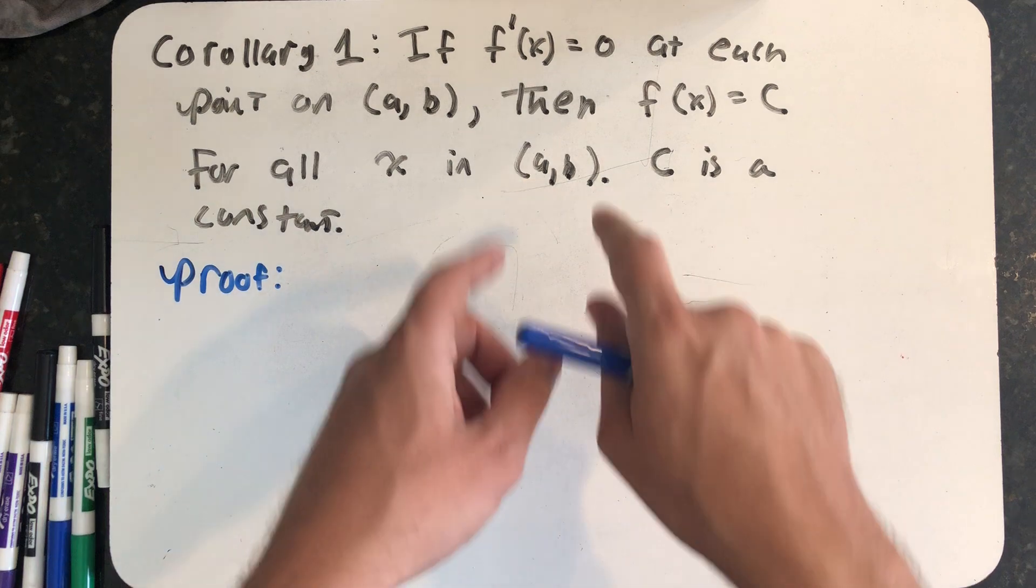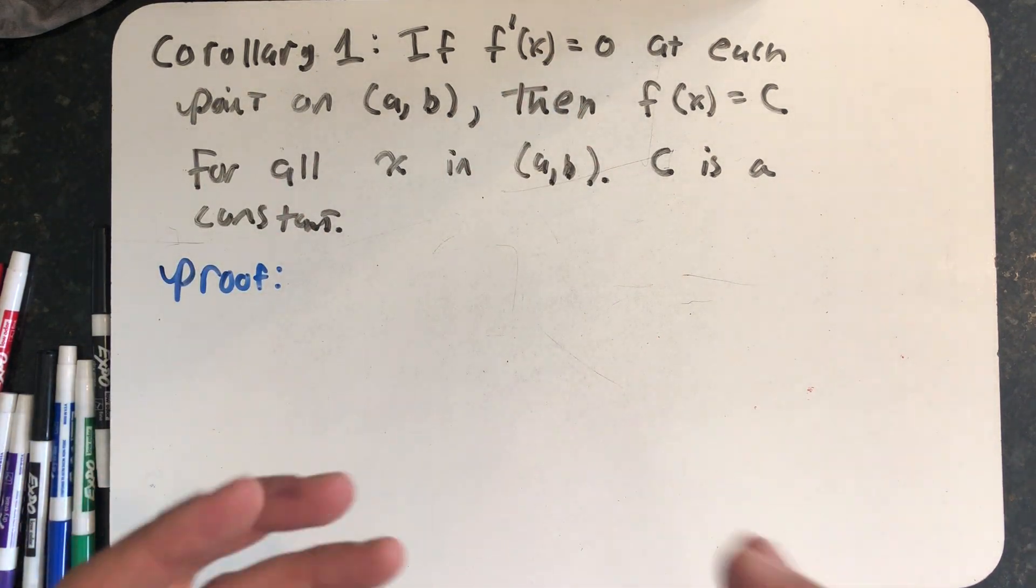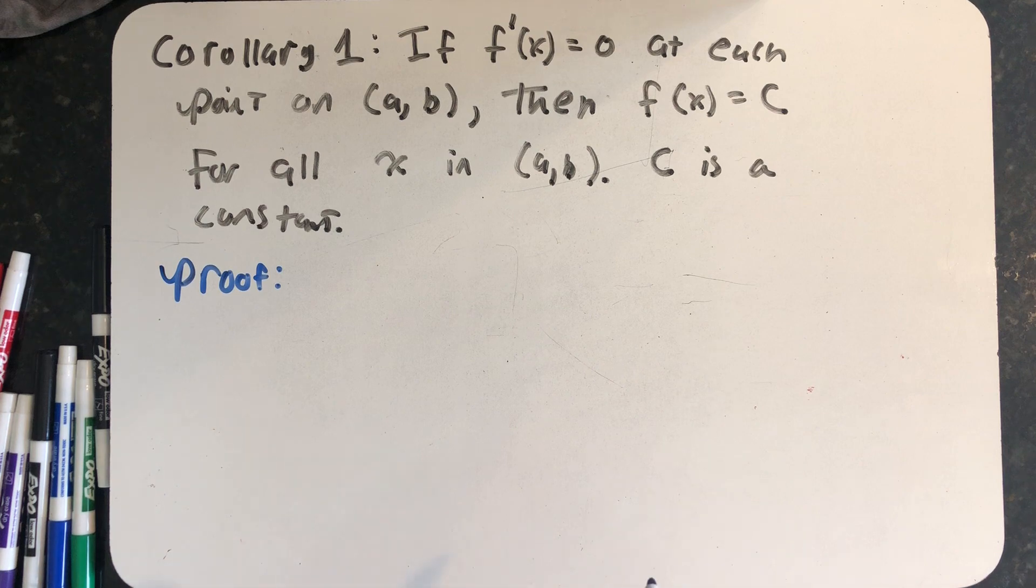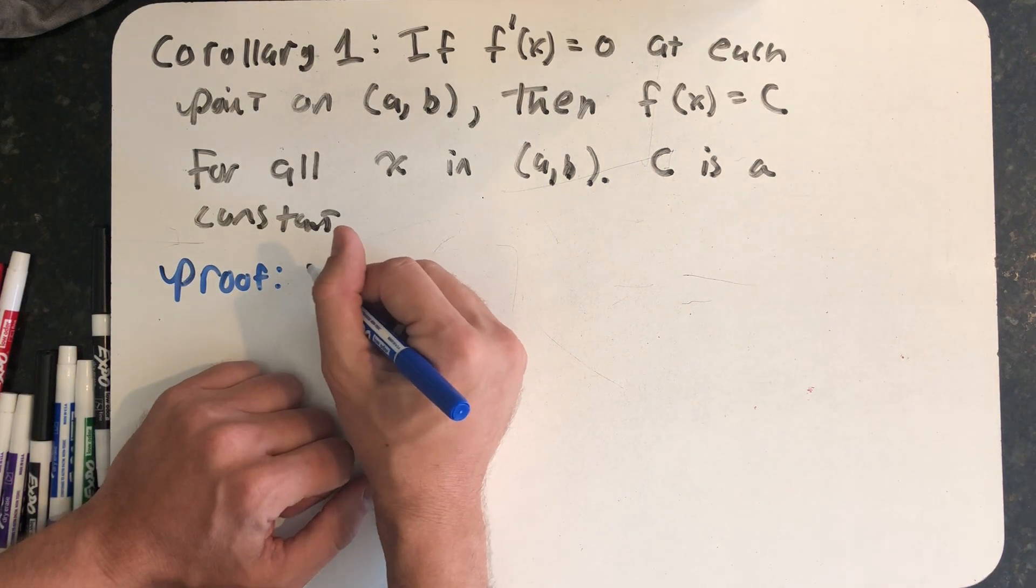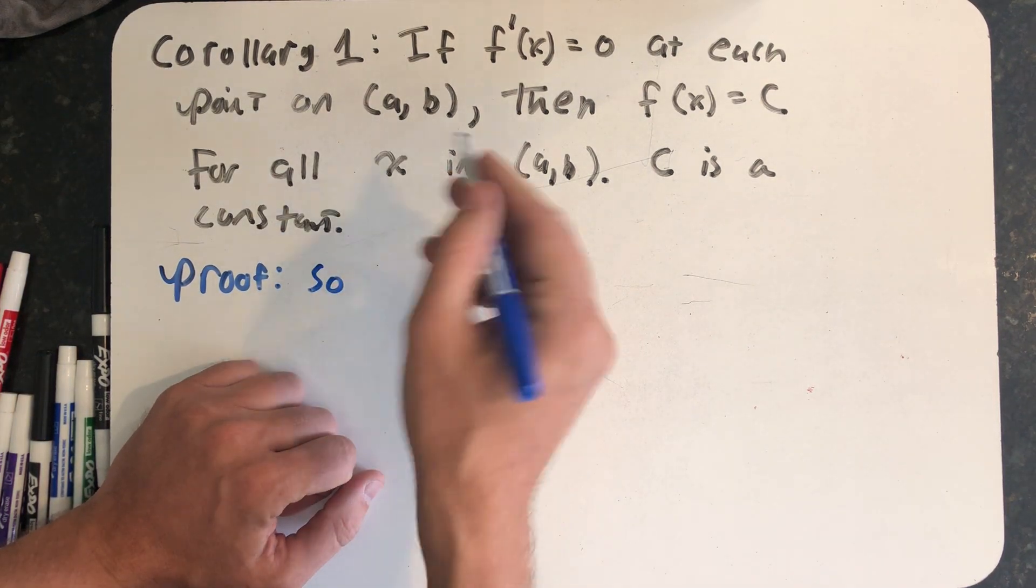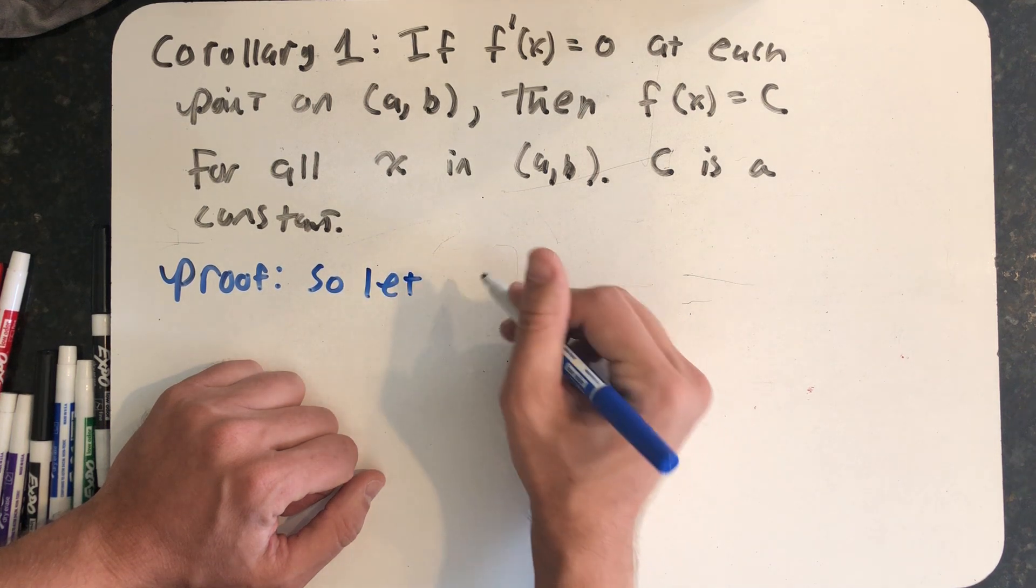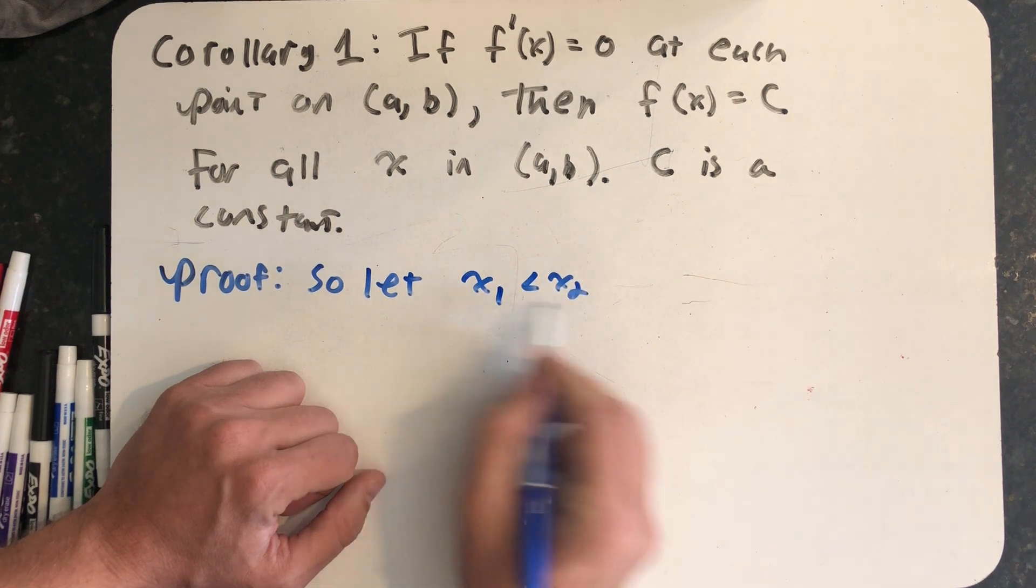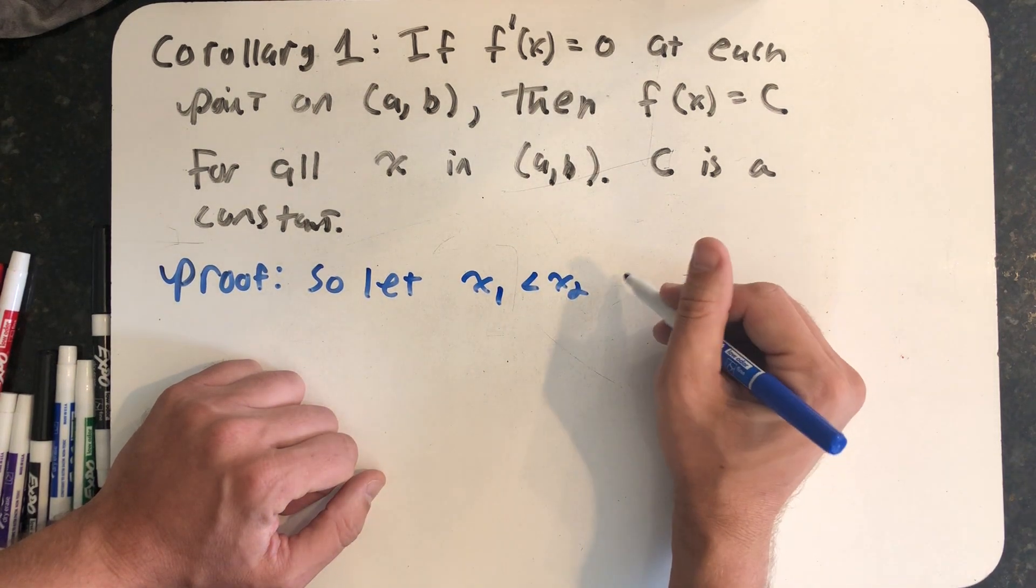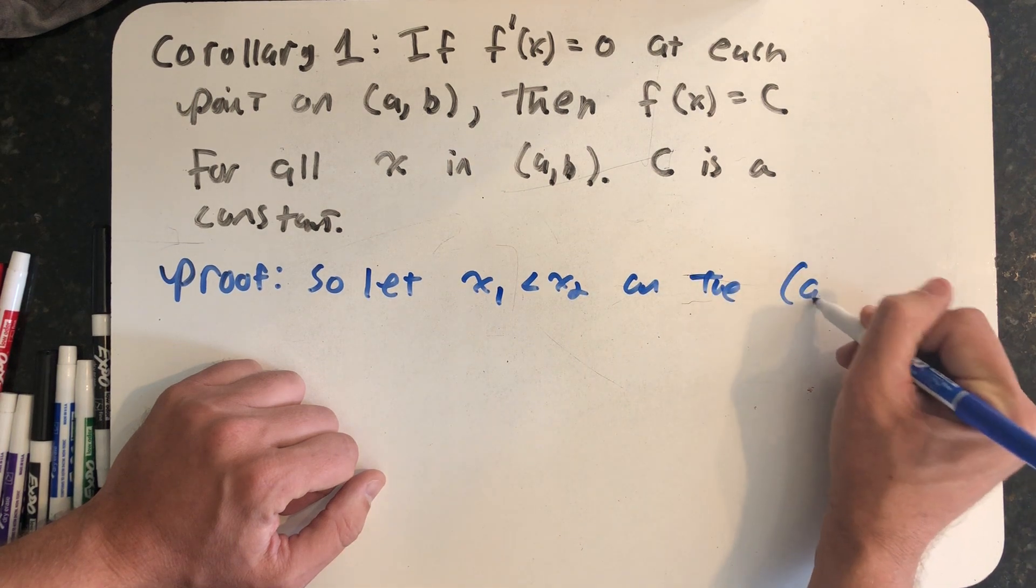So all I am told is that I have a derivative that exists and is equal to zero over the open interval (a, b). To use the mean value theorem, I actually need to know about continuity on a closed interval. So what I'm going to do is take two values on the inside of that open interval. So take two x values, x1 and x2 that are both on the interval (a, b).